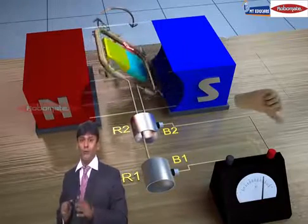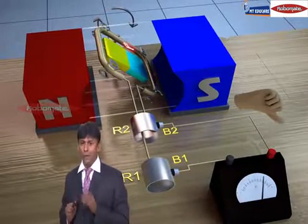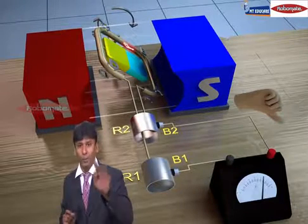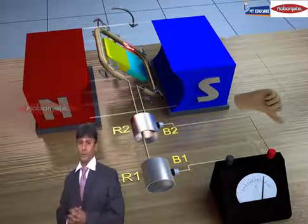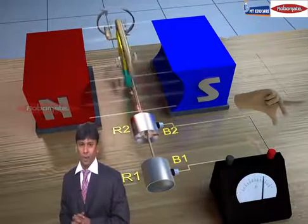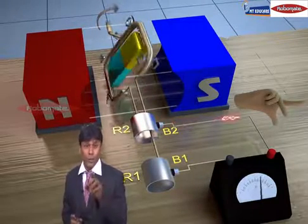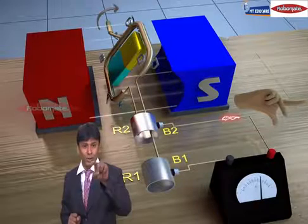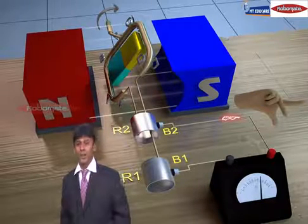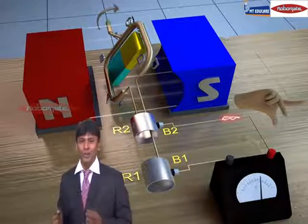Now in the second half of the cycle, first half of the cycle we have seen the current has gone from B1 to B2. Now the current has started from B2 and now the current is going to B1. That means the direction of current has changed.